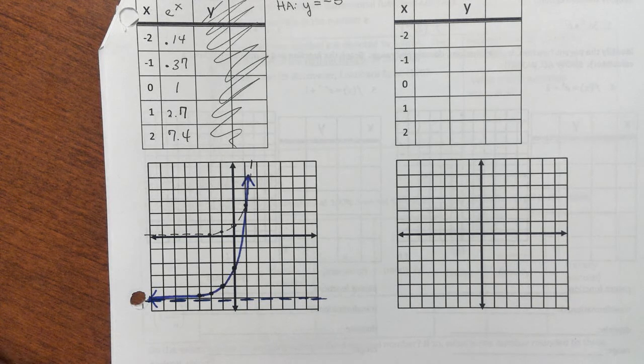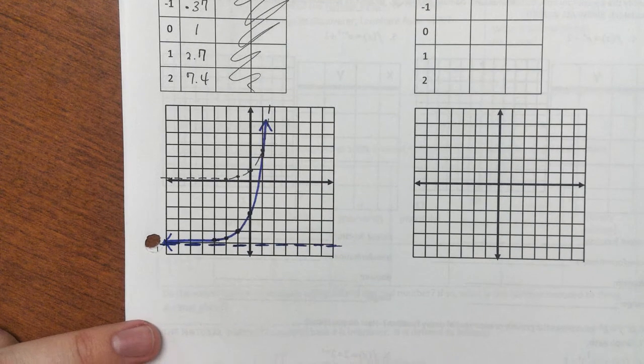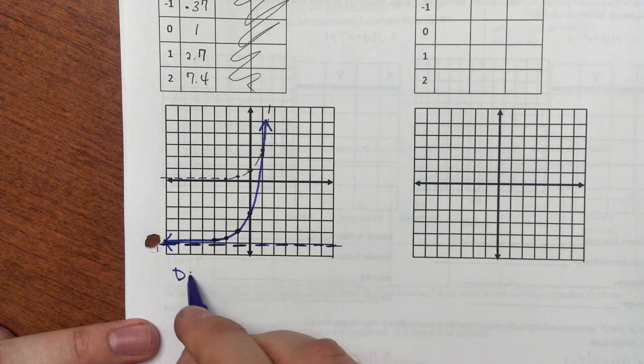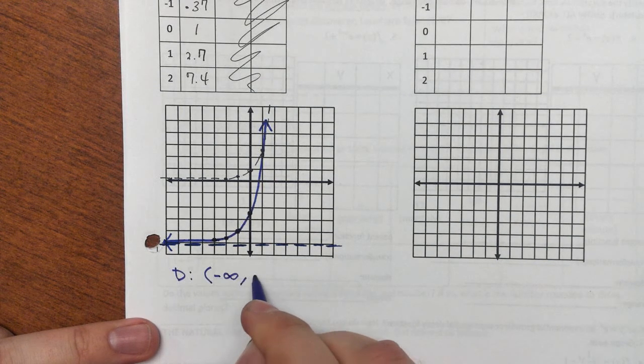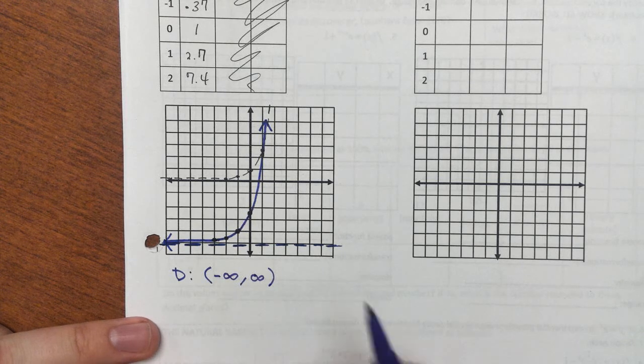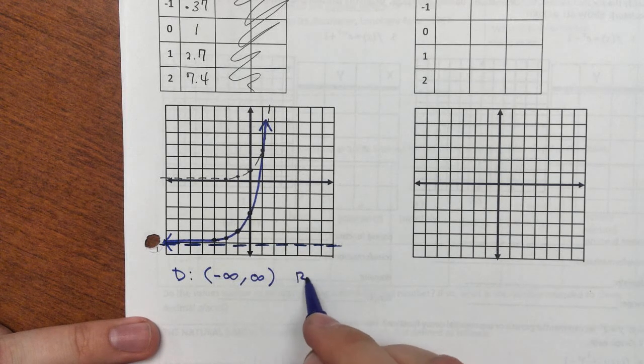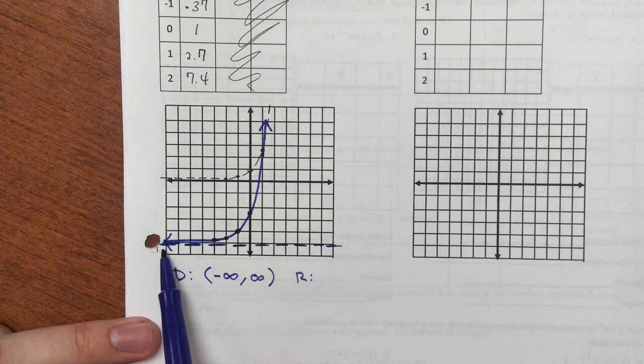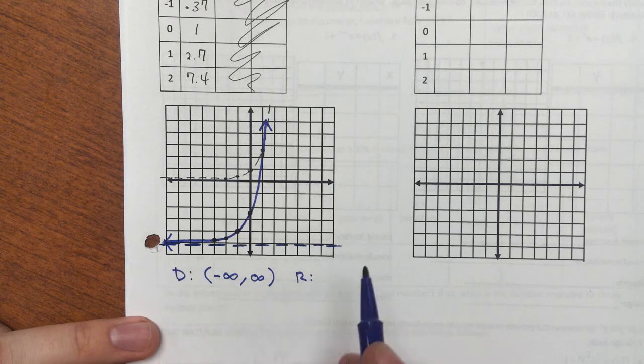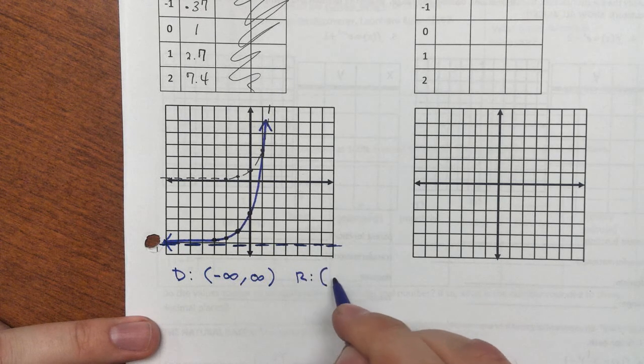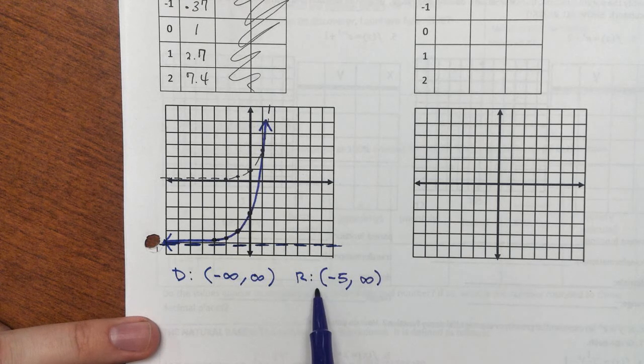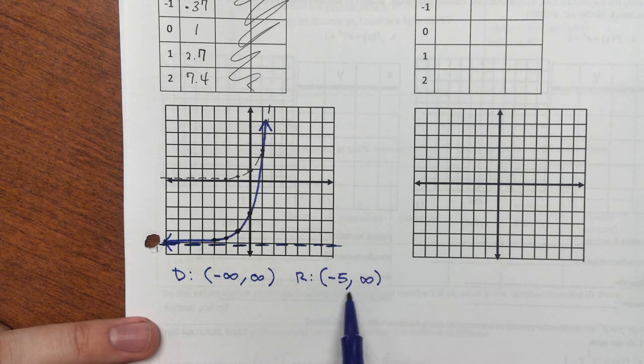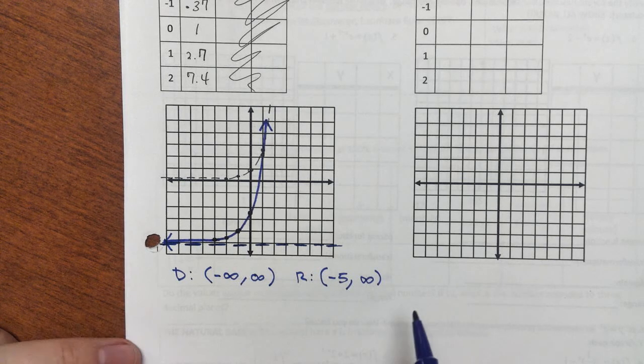Now, if we're asked about domain, range, all that other stuff, of course, we should know how to do that. I'm not going to run through all of that right here. But I will make a note. The domain, as for any exponential function, is negative infinity to infinity. The range, well, our y's get really close to this asymptote without ever quite touching it. So it's all the y's that are greater than negative 5, or in interval notation, parenthesis, negative 5, comma, infinity, parenthesis.